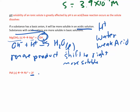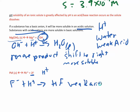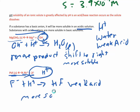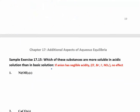Now let's look at PbF₂. We check the anion — F⁻ — and see if it reacts with H+. F⁻ + H+ gives HF, which is a weak acid. So when there's a lot of H+, it interacts with F⁻, removing it from equilibrium. More of the solid must dissociate to replace the F⁻ ions, driving the reaction forward — so PbF₂ is also more soluble under acidic conditions.